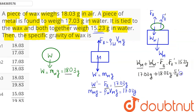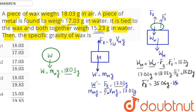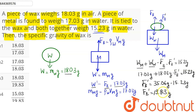So substituting: 17.03g + 18.03g minus buoyant force on wax equals 15.23g. Simplifying: 35.06 minus 15.23 gives us the buoyant force on wax equals 19.83g.